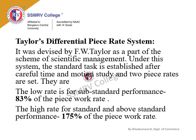Taylor's Differential Piece Rate System was devised by F.W. Taylor as part of his scheme of scientific management. Under this system, the standard task is established after careful time and motion study, and two piece rates are set: a low rate of 83% of the piece work rate for sub-standard performance, and a high rate of 175% of the piece work rate for standard and above-standard performance.